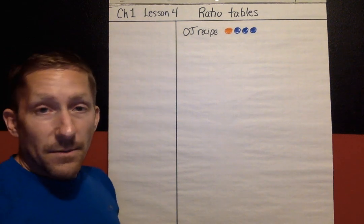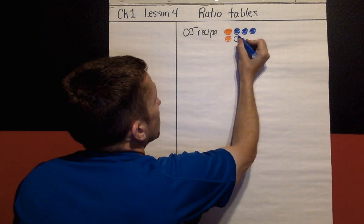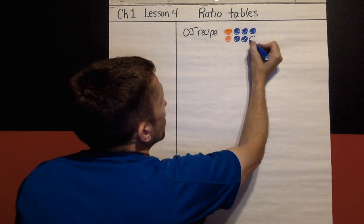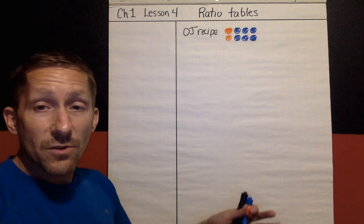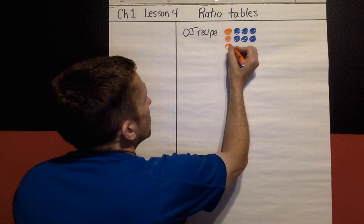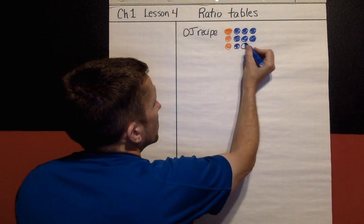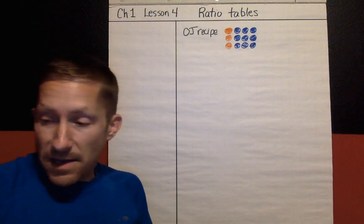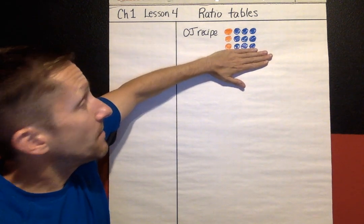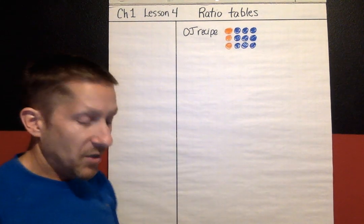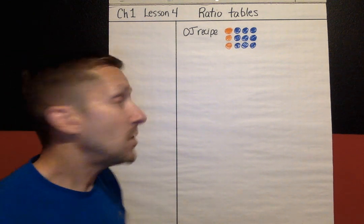If you wanted to double that recipe, another can of OJ and three more cans of water. For an even bigger batch, another can of OJ and three more waters. Each of those would taste the same — if you doubled it, it would taste exactly the same; if you tripled it, exactly the same. Those ratios would be equal.